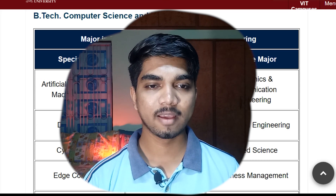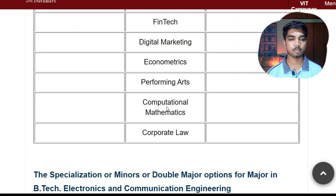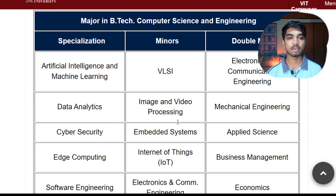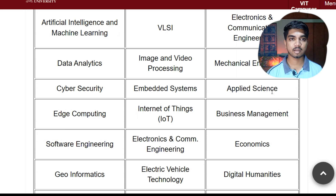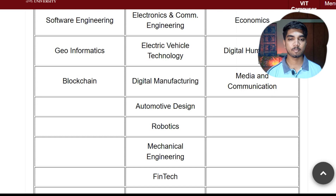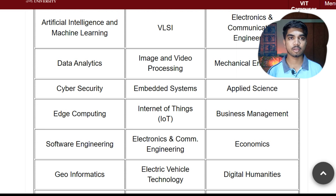In minor also you have different options in CSE: VLSI, Image and Video Processing, Embedded System, IoT, Electric Vehicle, Robotics, Competition, Mathematics, and Corporate Law. So you have different options. If you wanted to pursue CSE with a minor in Image and Video Processing, your final B.Tech degree would look like that. Or a Computer Science and Engineering with double major in Electronics and Communication Engineering - that's how your double major would look. Double major options include Electronics and Communication, Mechanical Engineering, Applied Science, Business Management, Digital Humanities, and Media and Communication.